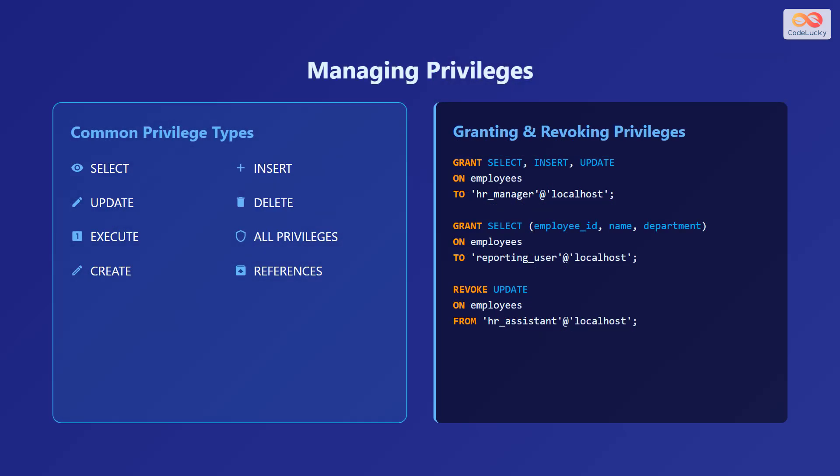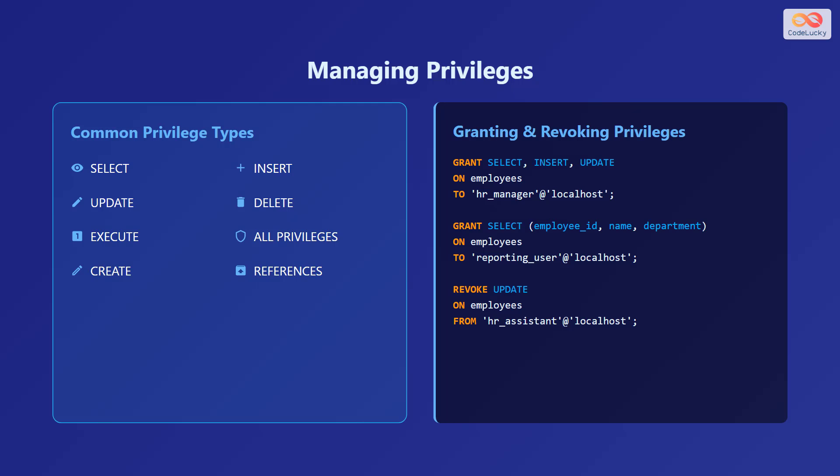Now let's discuss managing privileges. Privileges are specific permissions granted to users that determine what actions they can perform on database objects. Common privilege types include: SELECT (read data from tables or views), INSERT (add new data to tables), UPDATE (modify existing data), DELETE (remove data), EXECUTE (run stored procedures or functions), ALL PRIVILEGES (grants all available permissions), and CREATE (create new database objects such as tables or views).